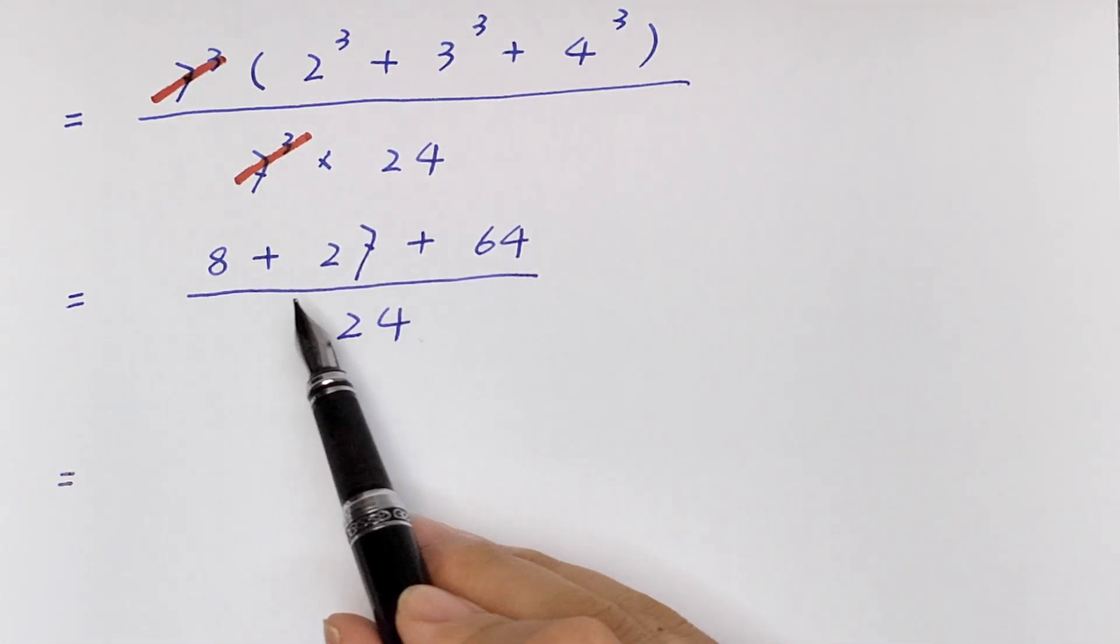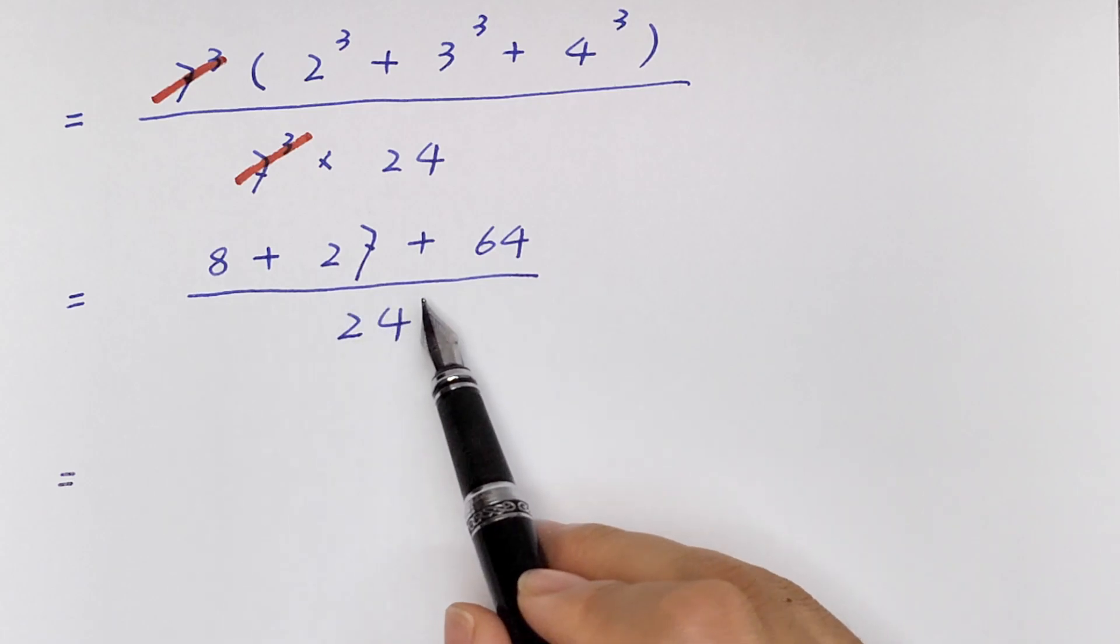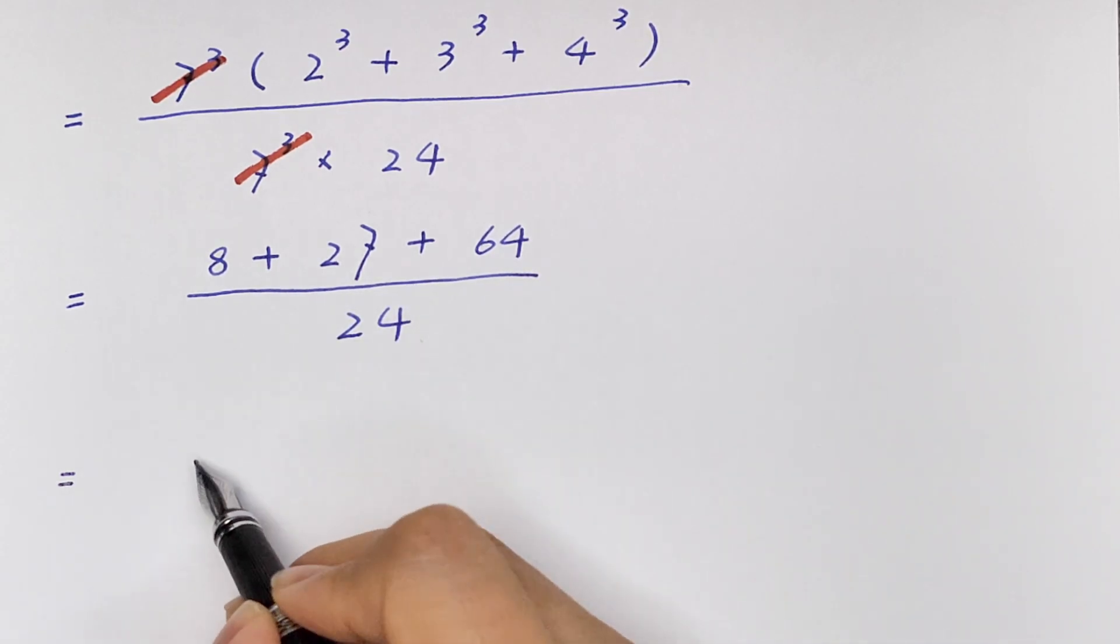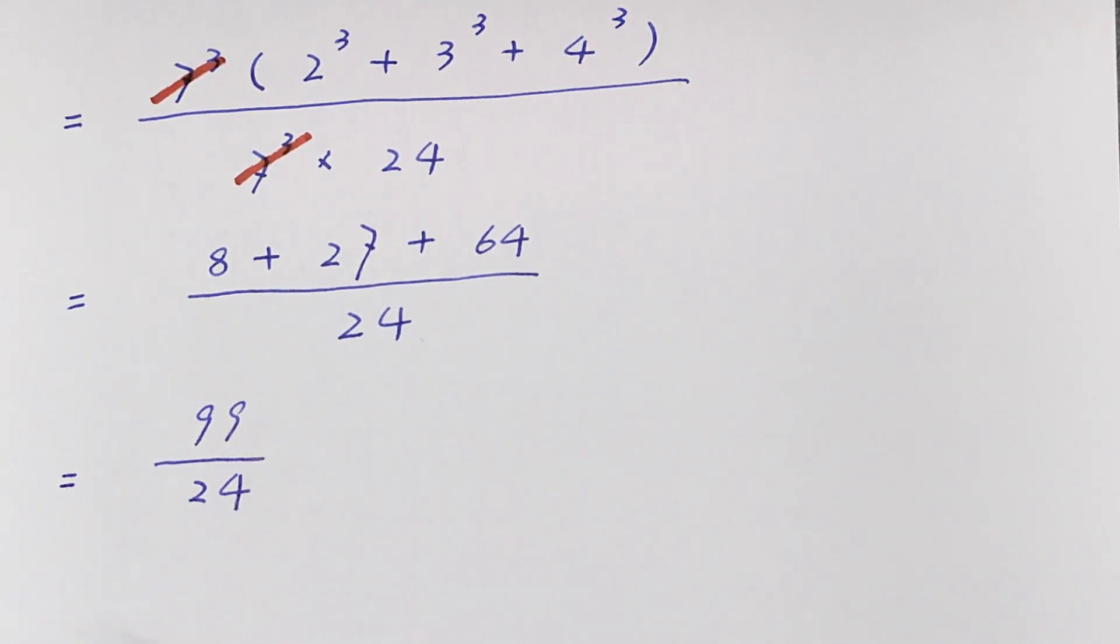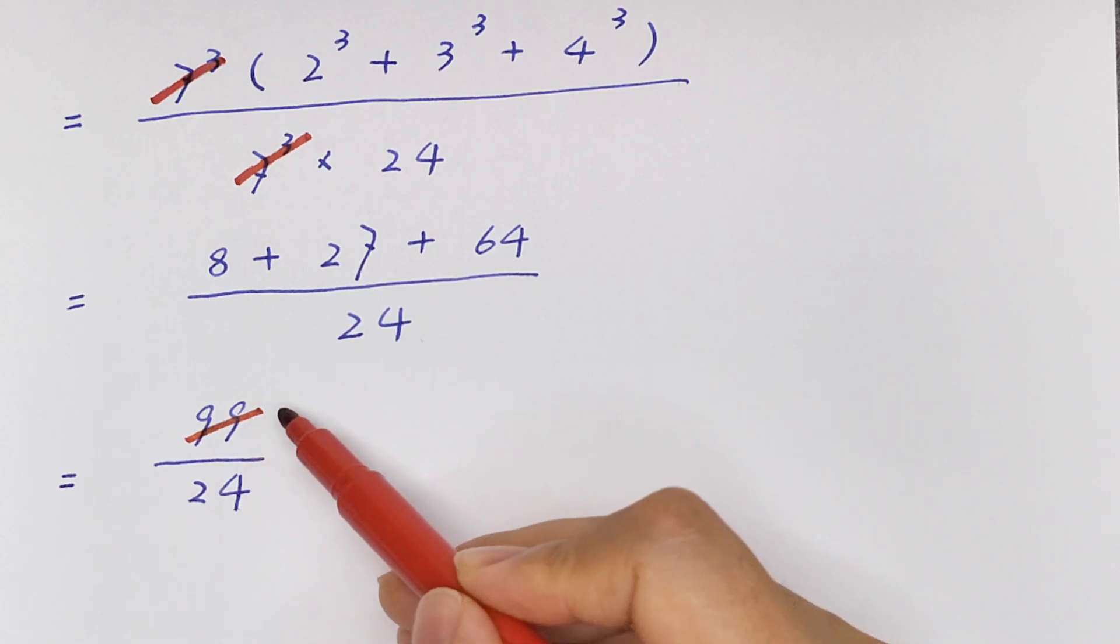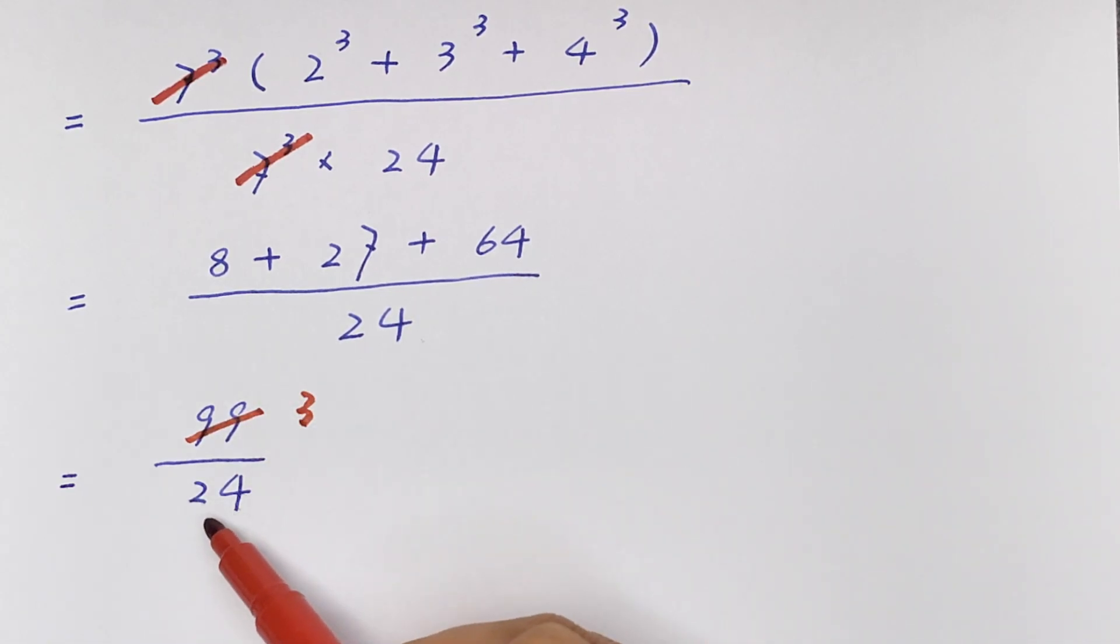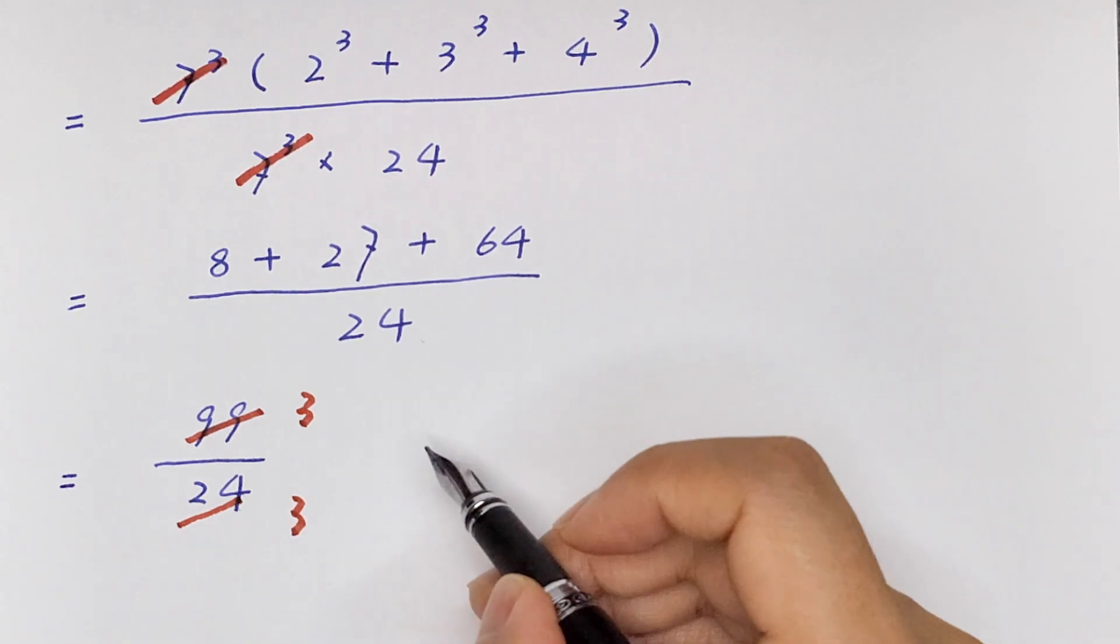8 + 27 + 64 equals 99 over 24. We divide it by 3 and this divided by 3 equals 33 over 8.